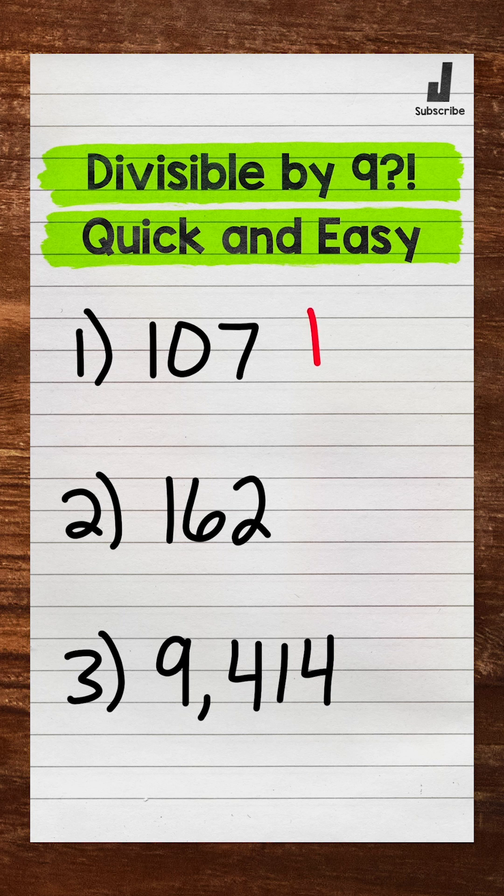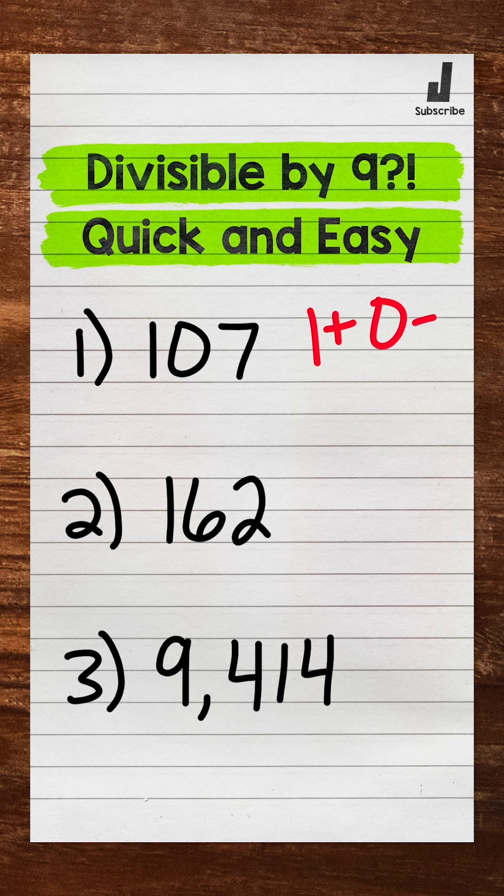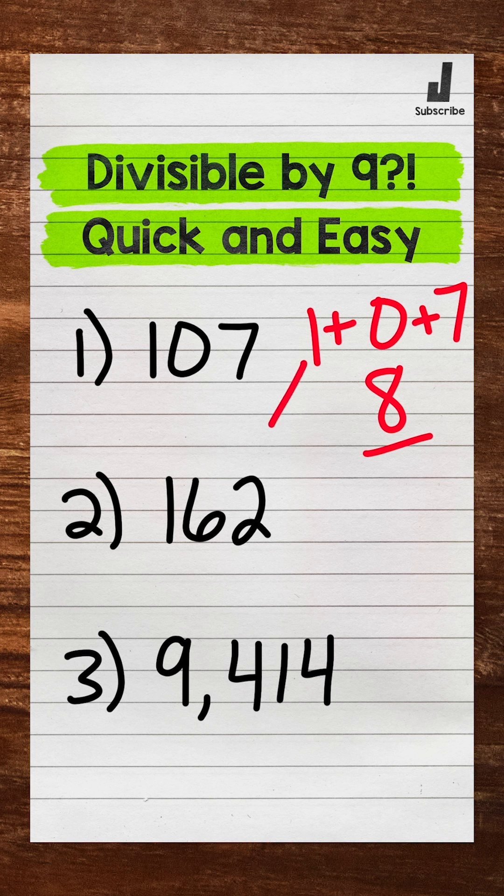For 107, we have 1 plus 0 plus 7. 1 plus 0 plus 7 equals 8. 8 is not divisible by 9, so 107 is not divisible by 9.